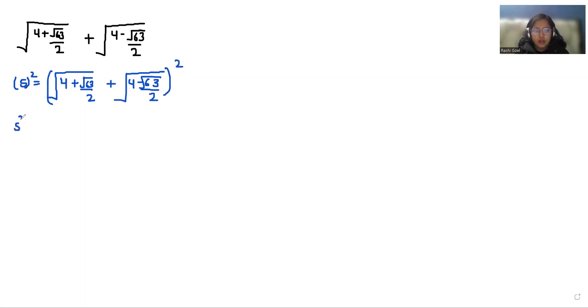So s² equals... we are going to use a very famous identity here: (a + b)² = a² + b² + 2ab. So we can write this as (√(4 + √63/2))² plus (√(4 - √63/2))² plus 2ab.